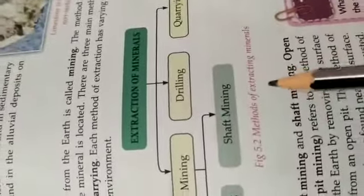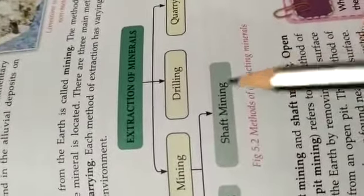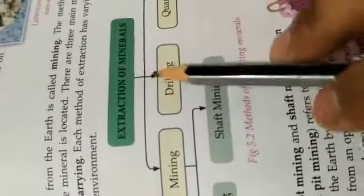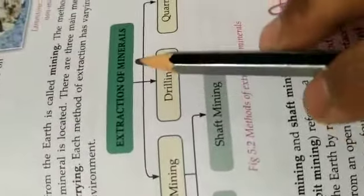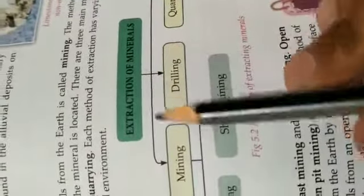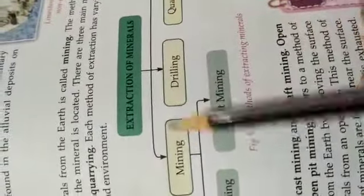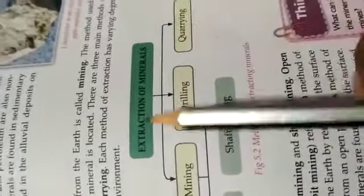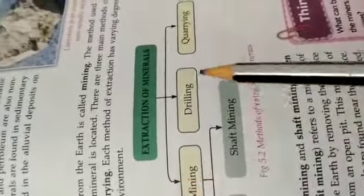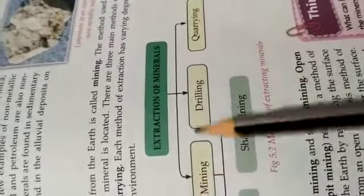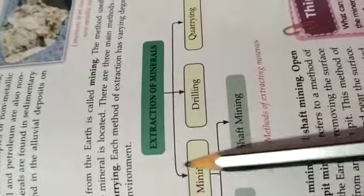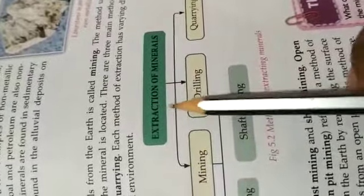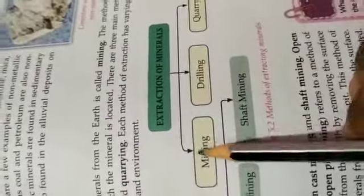There are three main methods of extracting minerals: mining, drilling, and quarrying. Each method of extraction has a varying degree of impact on the surrounding landscape and environment.